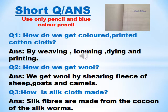Question number 3: How is silk cloth made? Answer: Silk fibers are made from the cocoon of the silk worm. This is the end of the chapter.